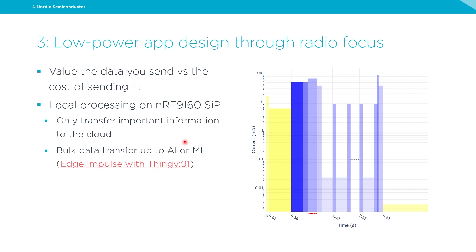Bulk data transfers are very useful. By sending 1,000 bytes instead of 100 bytes, you're increasing the value divided by cost by 10 times. For machine learning applications, we have Edge Impulse — a solution partner that has really simplified machine learning for edge devices such as the Thingy 91 and the NRF 9160 DK.